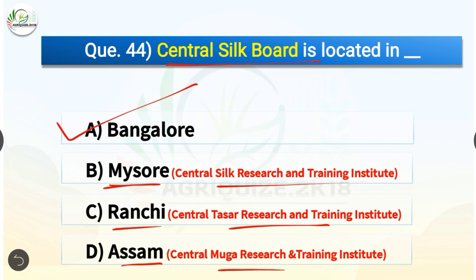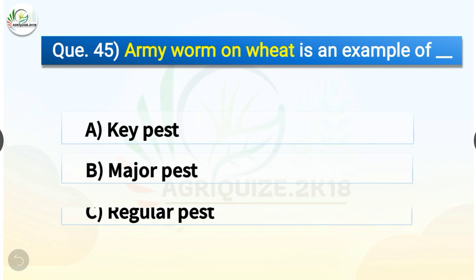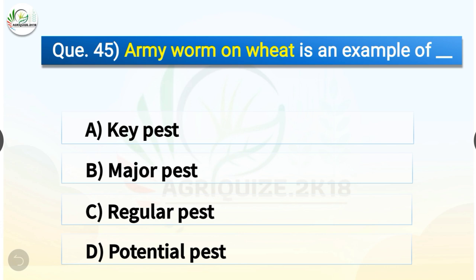Question number forty-five: army worm on wheat is an example of — options are key pest, major pest, regular pest, or potential pest. The correct answer is option B, potential pest. Potential pests are those which presently are not causing any economic damage. They do not cross the economic injury level even under favorable conditions, but any change in ecosystem may push their population higher and create a danger of economic damage.